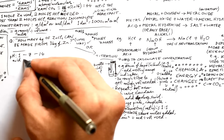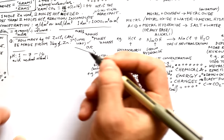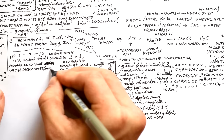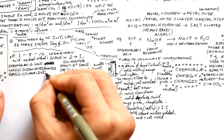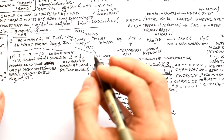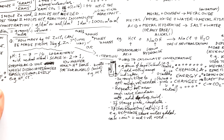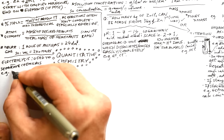pH goes from 1 to 14 — 1 is most acidic, 14 is most alkaline, 7 is neutral. An acid dissociates into H⁺ ions and negative ions. A strong acid dissociates very easily — giving a high concentration of H⁺ ions. A weak acid dissociates only partially. For alkalis, it's OH⁻ ions. pH is a logarithmic scale, so a difference of 1 pH unit means a 10× difference in H⁺ ion concentration.